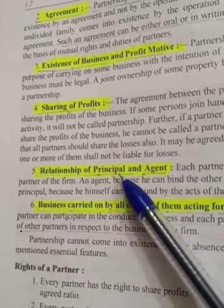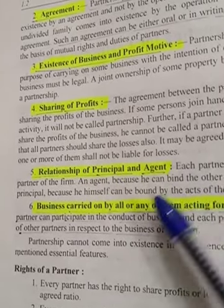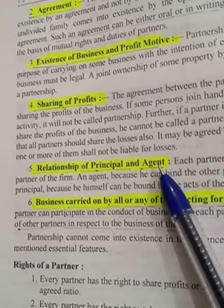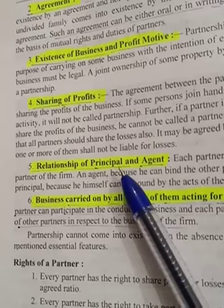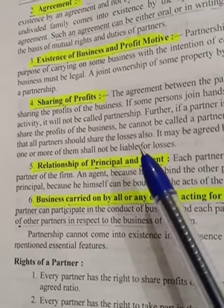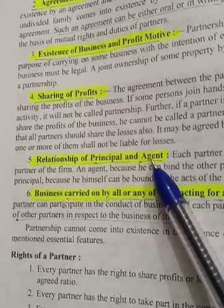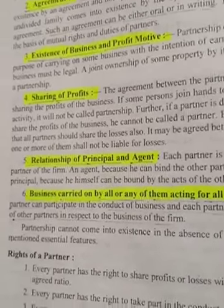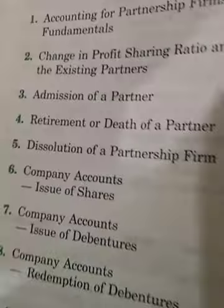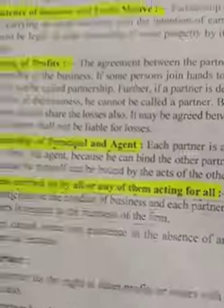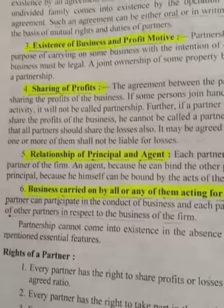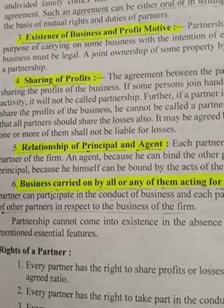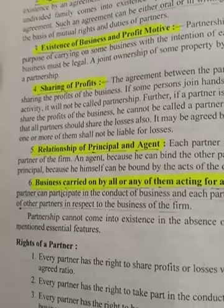The next feature is the relationship of principal and agent. Partners are considered both principal and agent. In the case of the partnership firm, when one partner makes a decision, the other partners are also responsible for it. If a decision has a favorable or unfavorable effect on the partnership firm, all remaining partners are responsible and answerable.